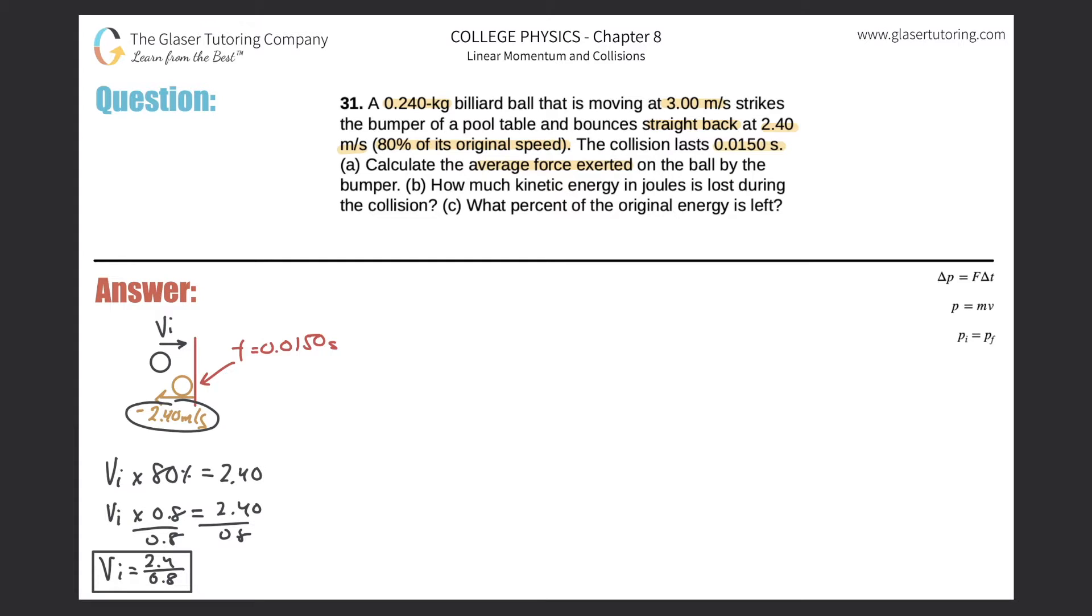Find the average force exerted by the ball. They told me a time, they're giving me some velocities. I know the momentum is changing, and they want me to calculate force. So you're going to be using this equation at the top right. Change in momentum, aka impulse, equals the force applied multiplied by the change in time, or the time over which that force is applied.